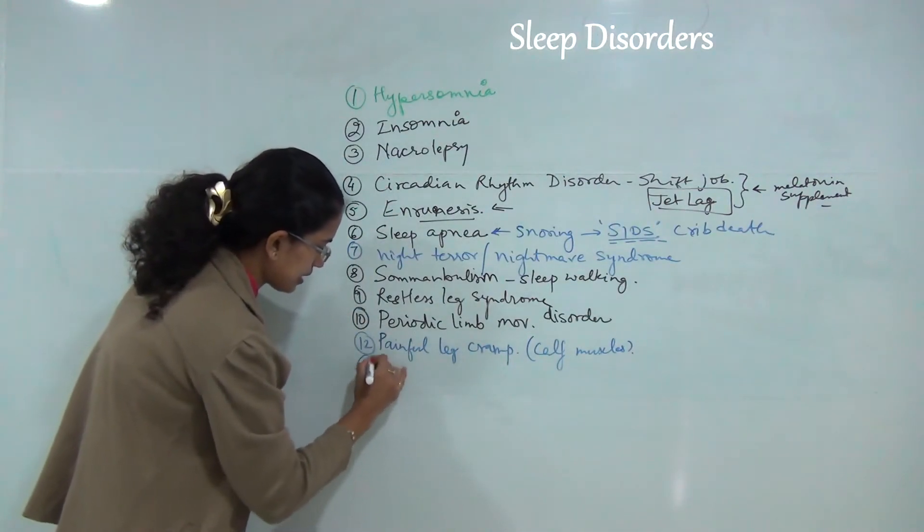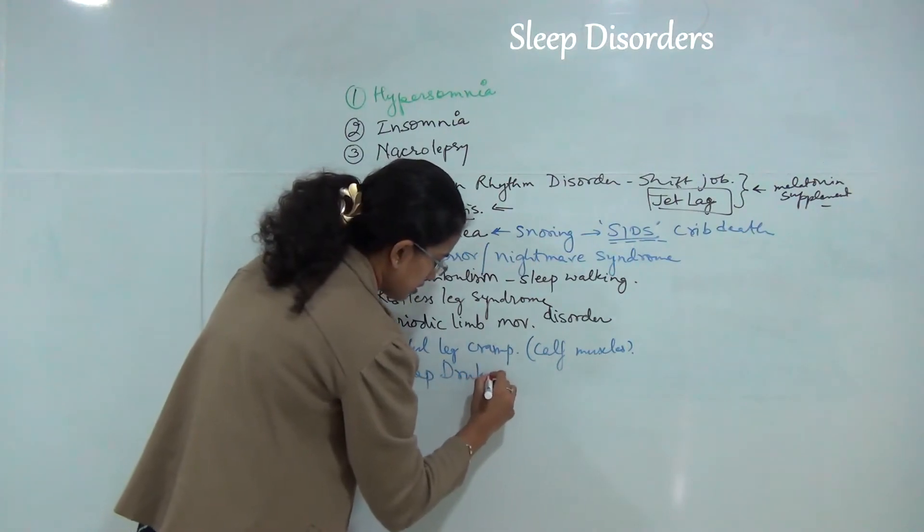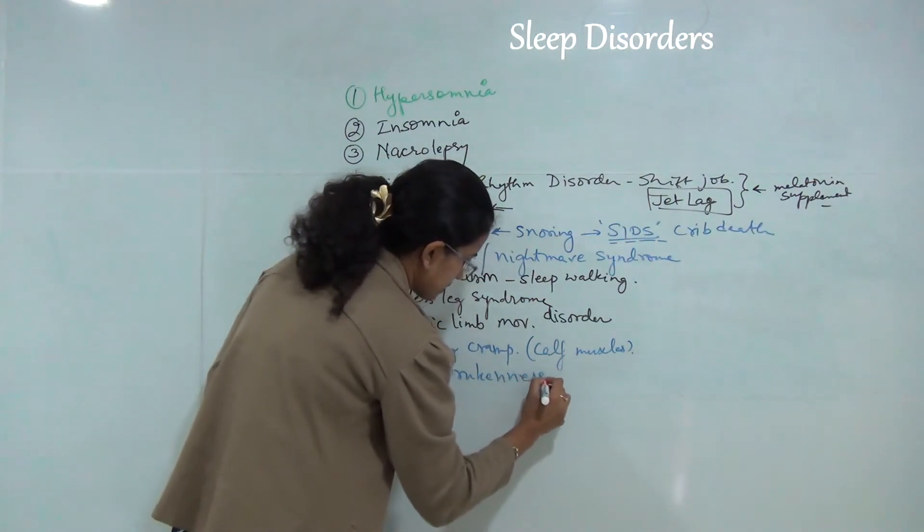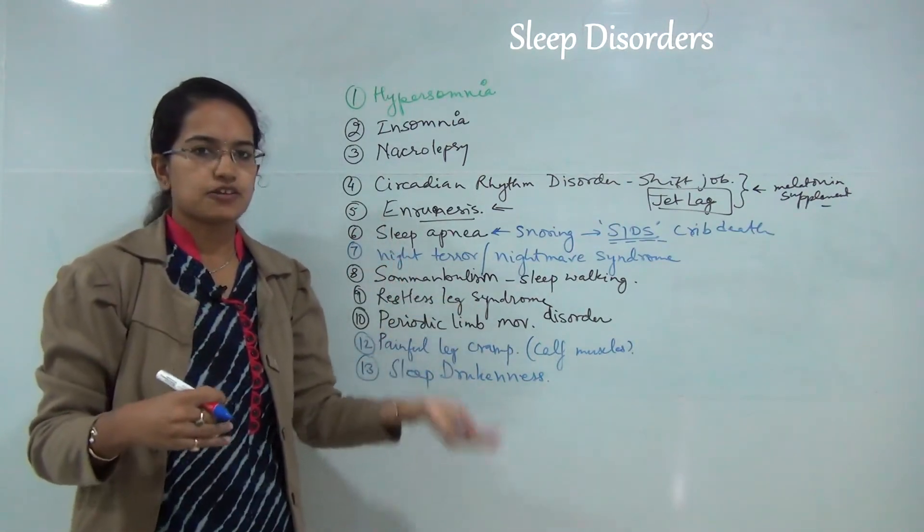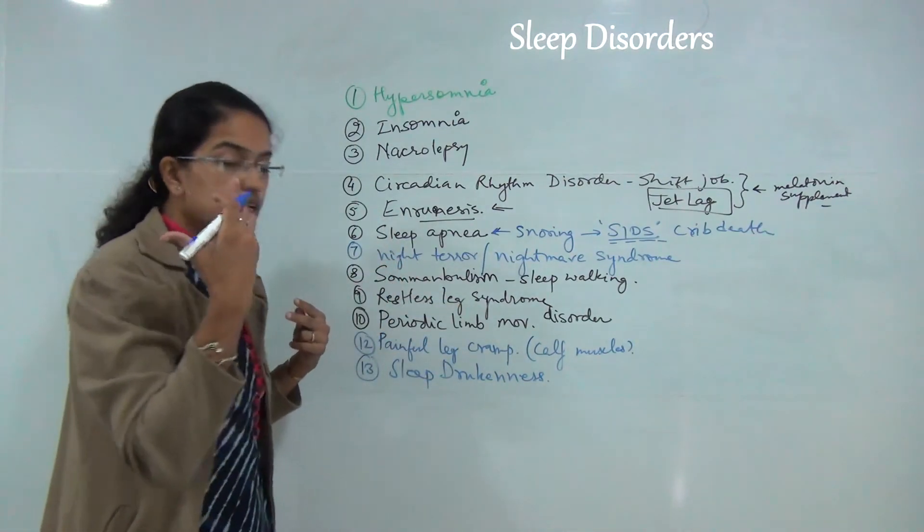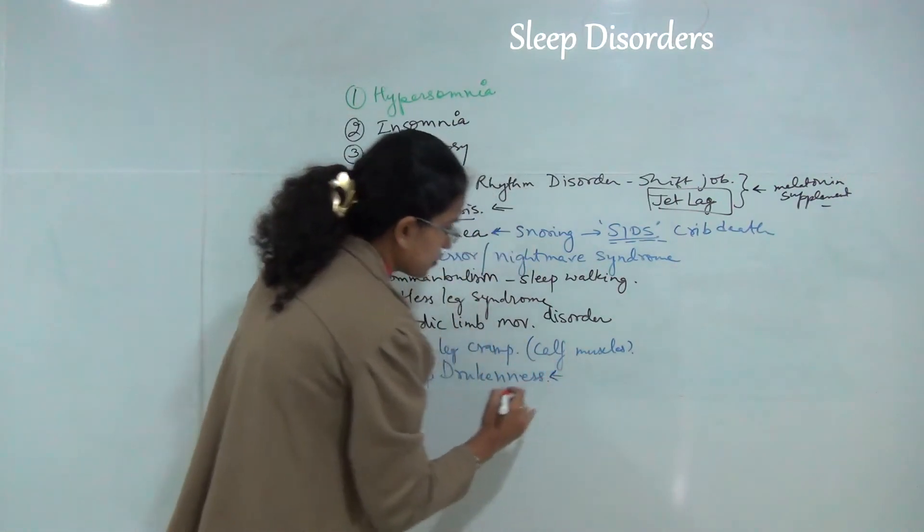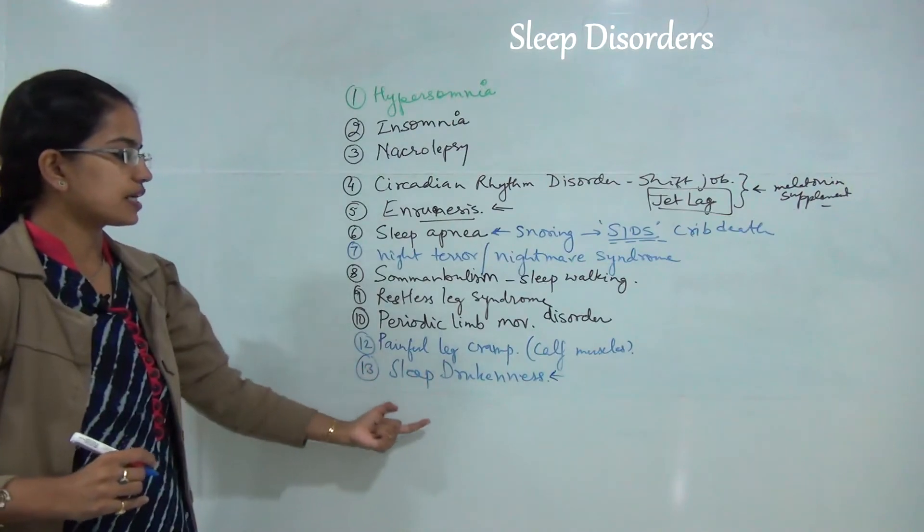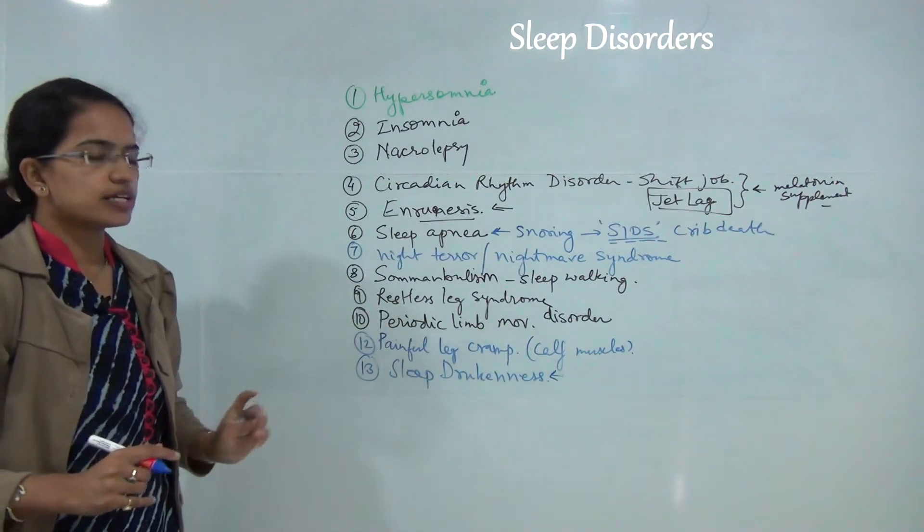Finally is the state of sleep drunkenness. Under this stage, if a person is under a very deep sleep and you wake him up, he will be kind of disoriented as soon as he wakes up. This is known as a state of sleep drunkenness. These are some of the common sleep disorders that occur.